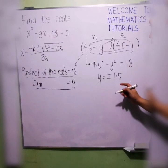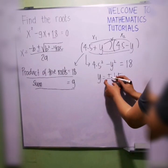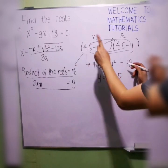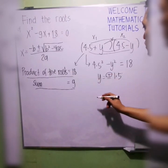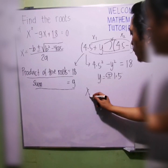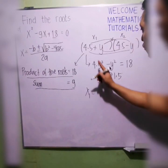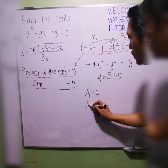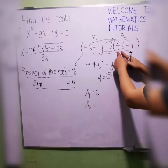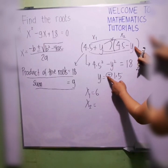Whatever we choose here is either positive or negative, we will come up with the same two roots. For simplicity, we will choose plus. We have X1 is equal to 4.5 plus 1.5 here. So, we have 6.